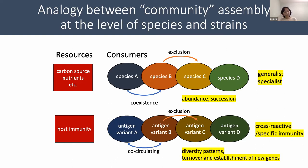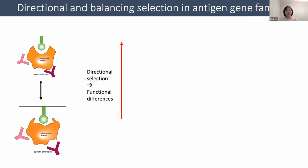When we think about species as generalists or specialists in terms of their resource usage, similarly for antigens, they could elicit cross-reactive immune memories in the host or only elicit very specific memories. These analogies are important because at the fitness level, we can borrow the coexistence theory developed by Chesson to understand the fitness differences between different antigens.